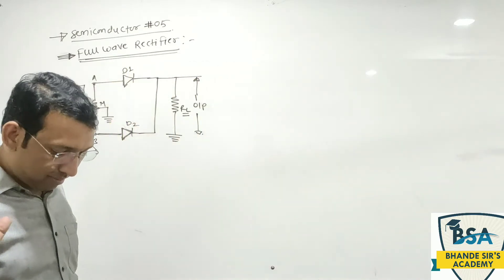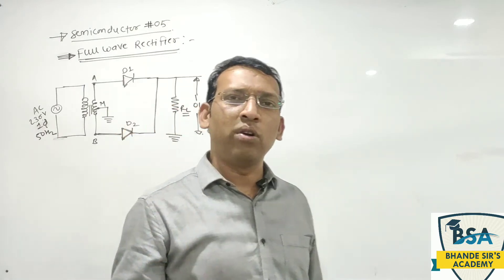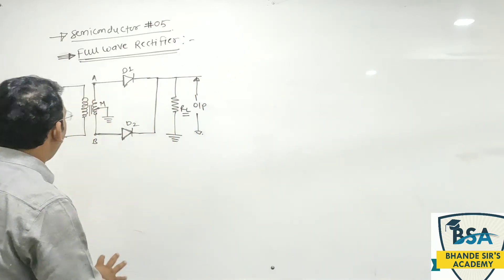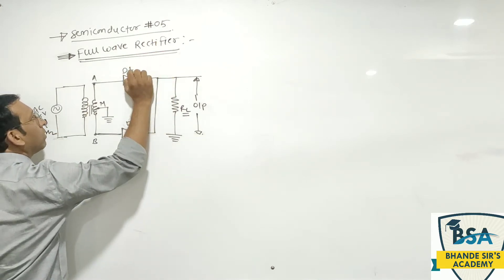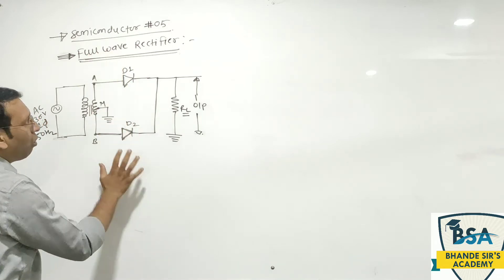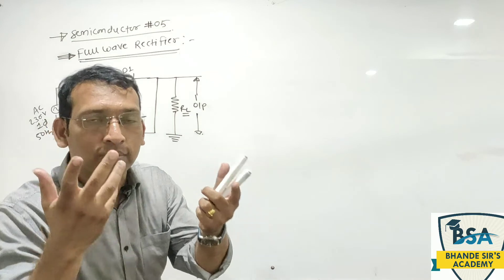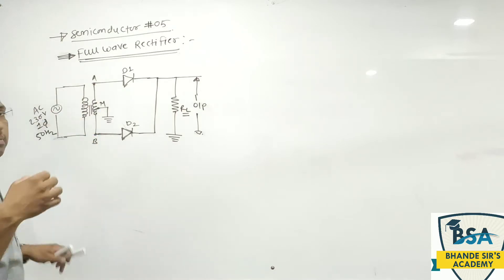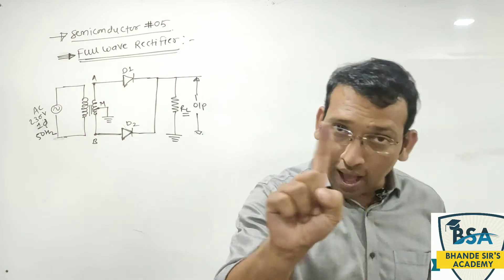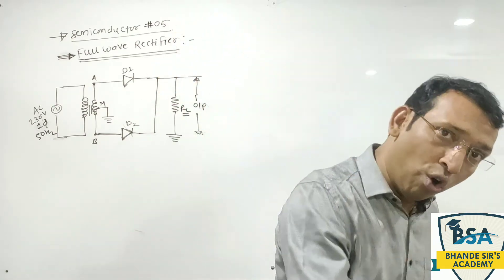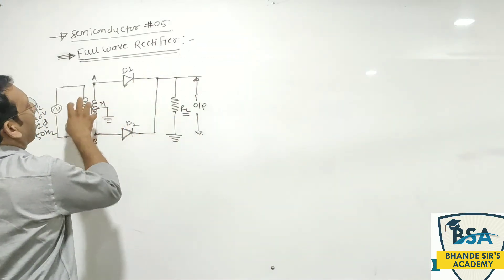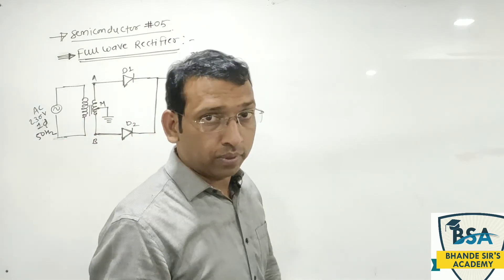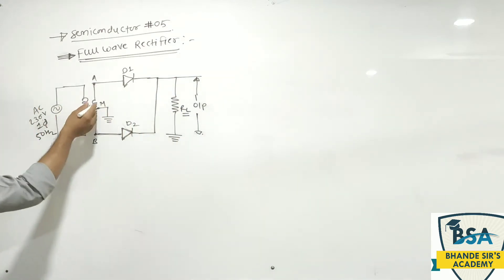वैसे diode की भी rating होती है — 12V, 15V, 25-20V। इससे ऊपर वो सहन नहीं कर पाएगा। अगर आपने 230V का झटका diode को दिया तो धुआं निकलेगा और बाद में काला-काला substance दिखेगा। तो उसको बचाने के लिए transformer higher voltage को lower voltage में drop करता है। AC circuits में हम transformer को विस्तार से पढ़ेंगे। अभी का जो transformer है वह center tap transformer है।